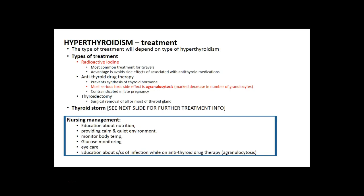For Graves' disease, the most common treatment is radioactive iodine — it avoids many side effects of antithyroid medications, but destroying the thyroid tissue results in hypothyroidism, so the patient will need lifelong thyroid replacement like levothyroxine or Synthroid. Antithyroid drugs like methimazole or PTU can be used — the most severe toxic side effect is agranulocytosis. Treatment can also be surgical removal of the thyroid. Nursing care focuses on proper nutrition, a calm quiet environment, body temperature monitoring, glucose monitoring, eye care, and watching for signs of infection during antithyroid drug therapy.